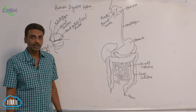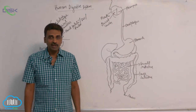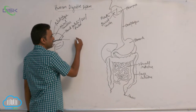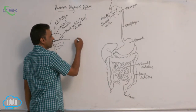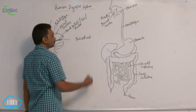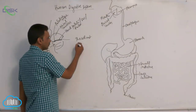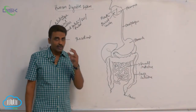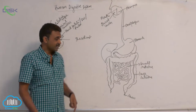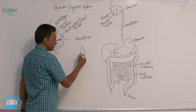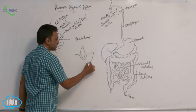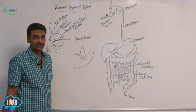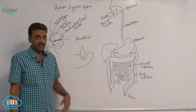If you see the nature of the tooth in human beings, it is thecodont. Thecodont means teeth are present inside sockets. A tooth is present inside the socket — that is why you call it thecodont.